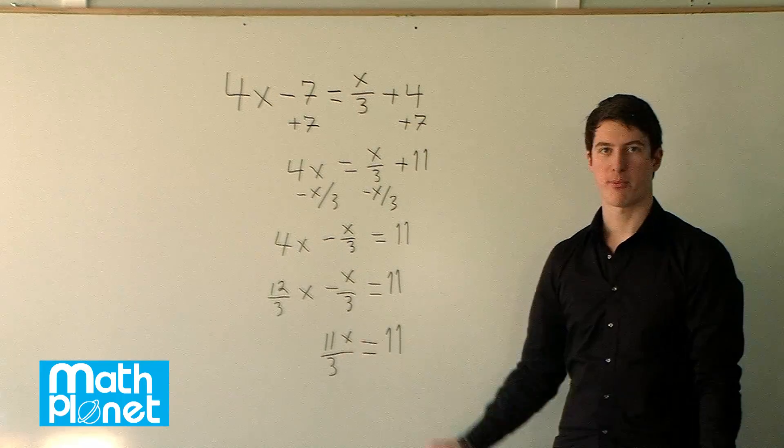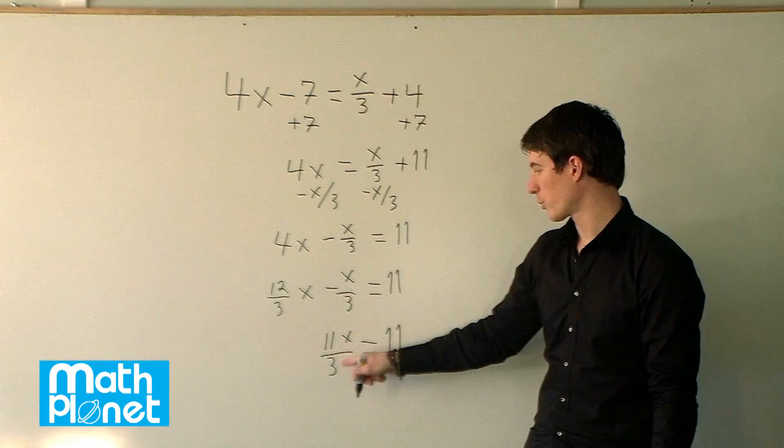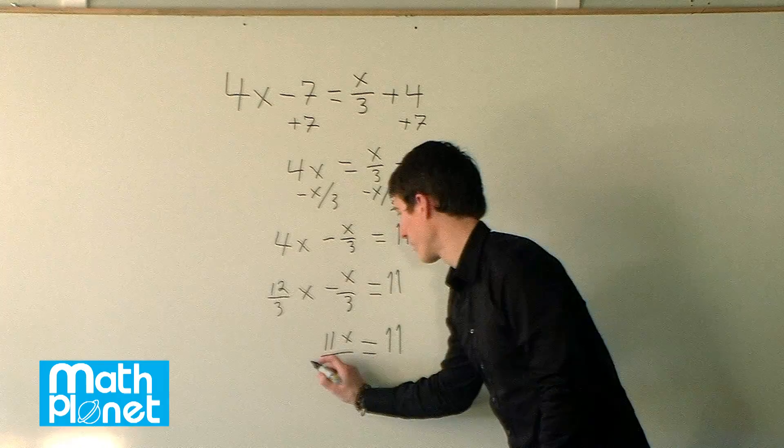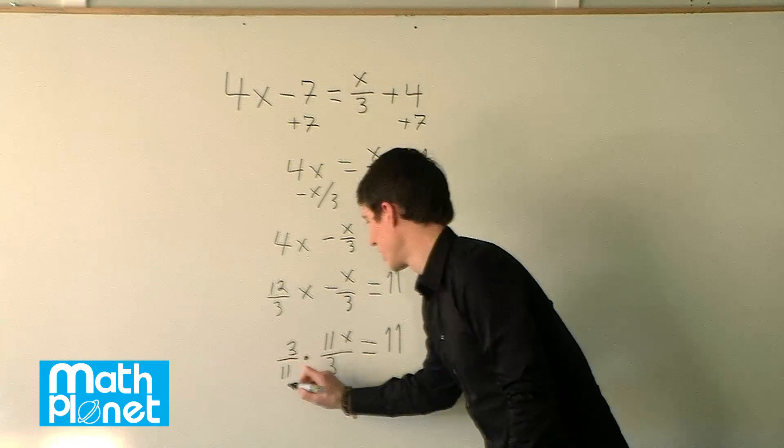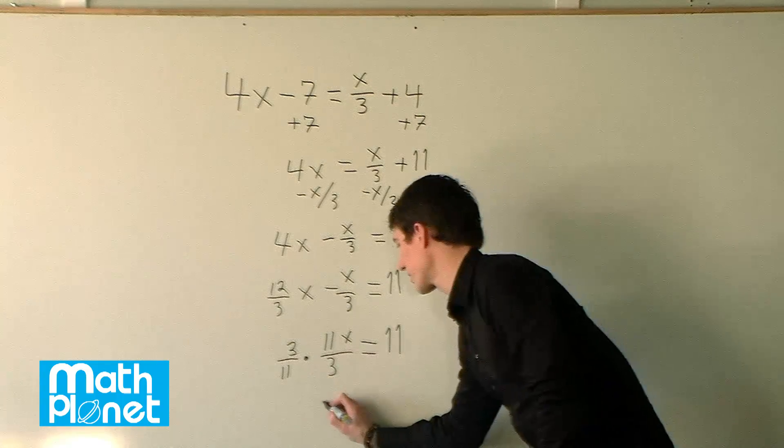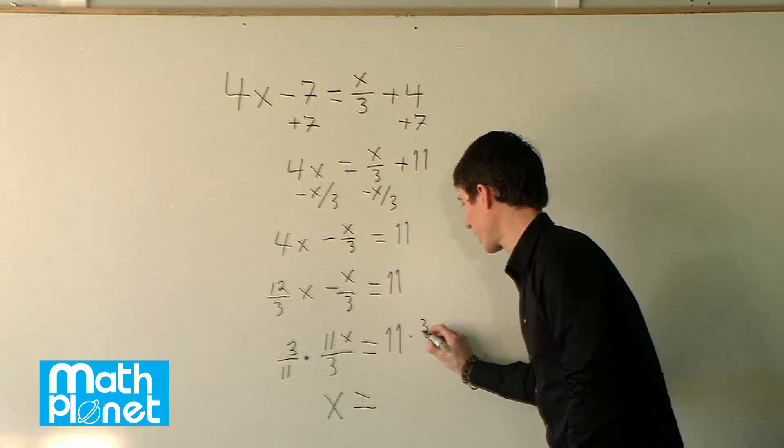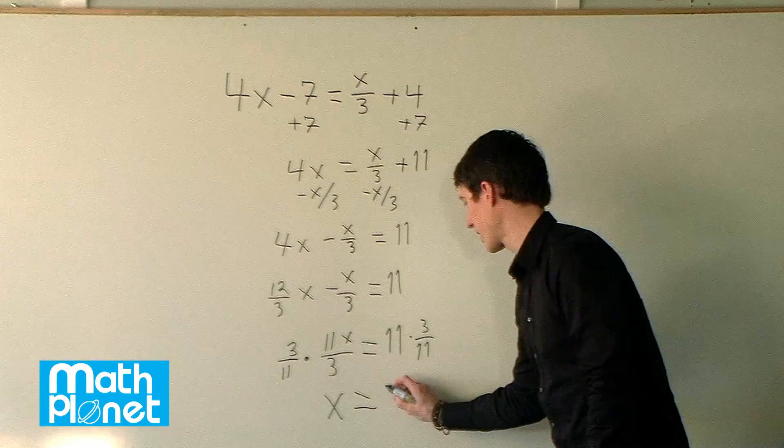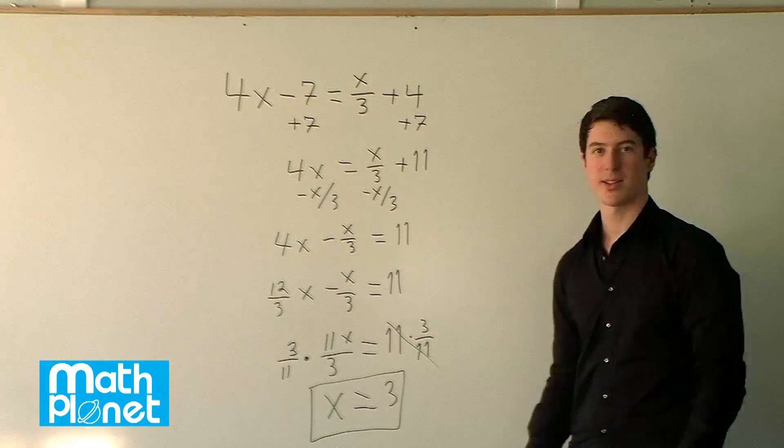And now finally, we can solve for x by doing an inverse operation in one step. We want to get rid of the 11 thirds so we have x equals something. To do that, we multiply both sides by 3 elevenths. So that will cancel, and we'll just have x equals on this side. When we multiply 3 elevenths here, the elevenths cancel and we get x equals 3. And that's it.